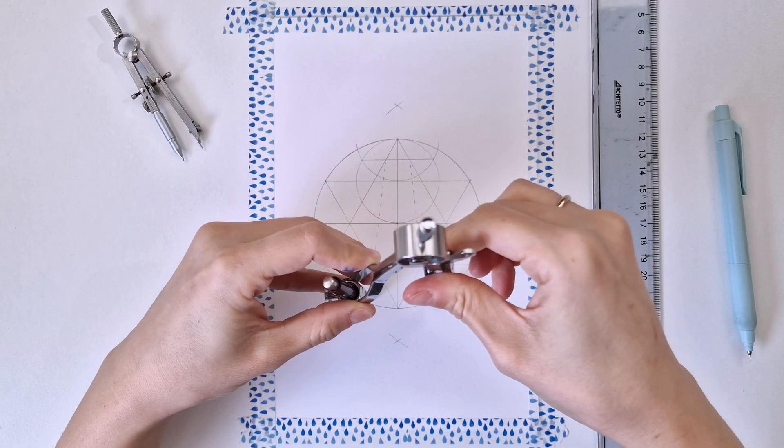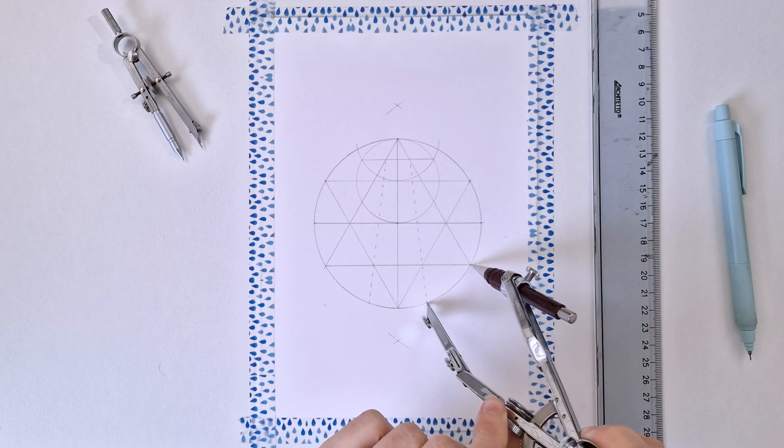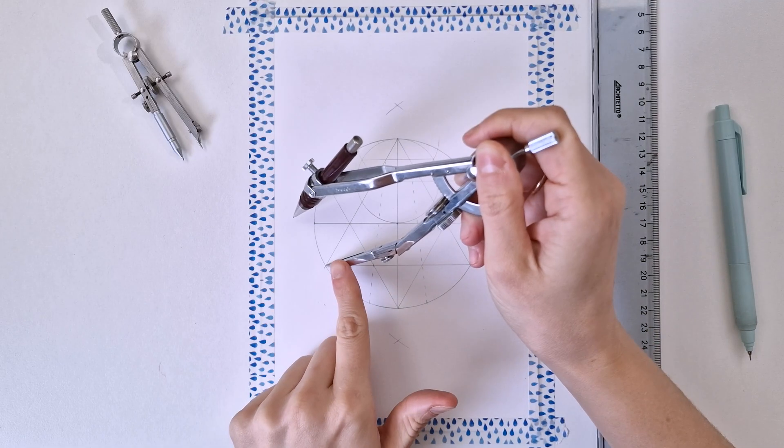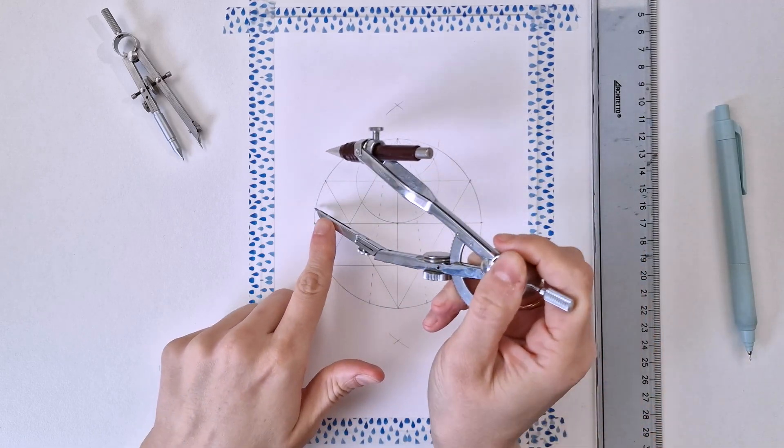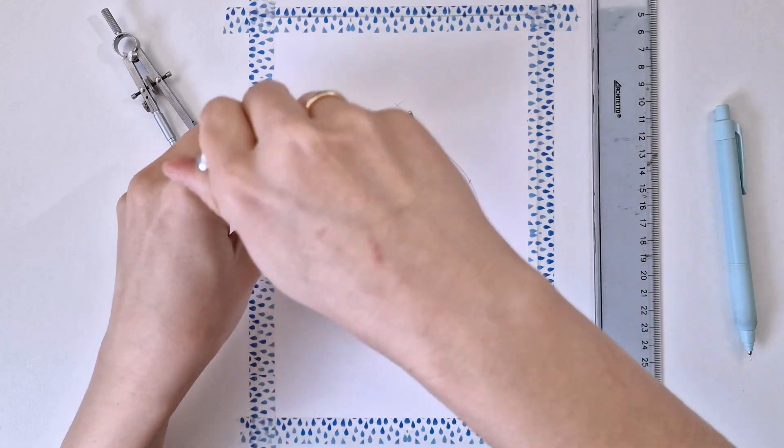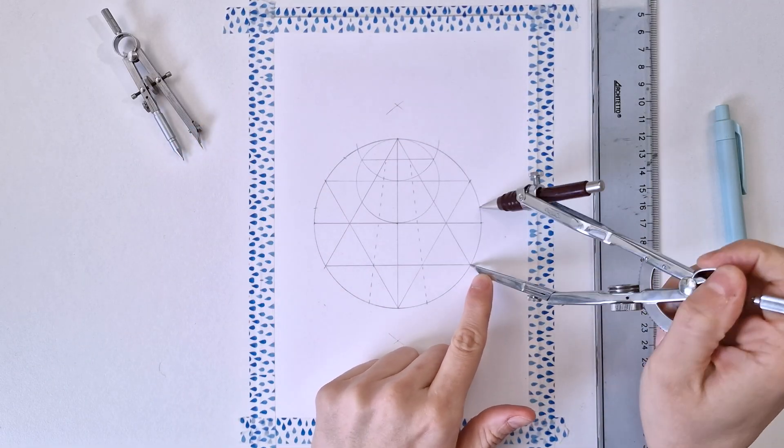So now I'm opening my compass to match this opening, checking if it matches with this intersection and this one again. And now I'm making my marks on the circumference to find the other divisions of the circle.